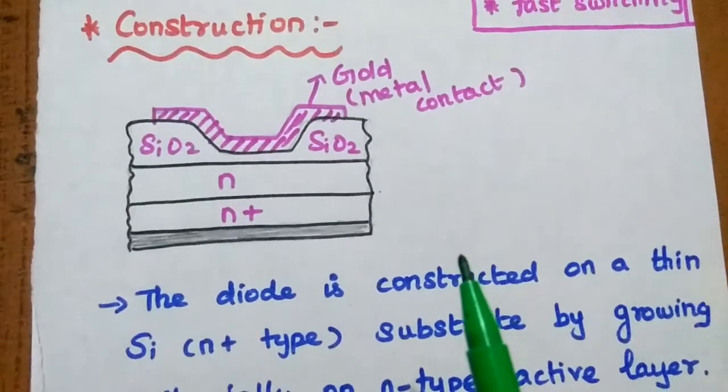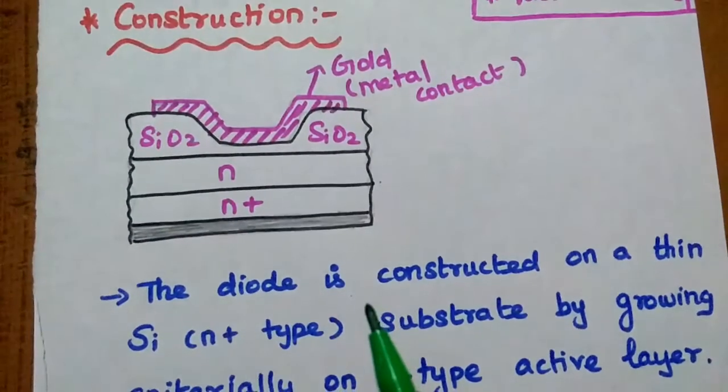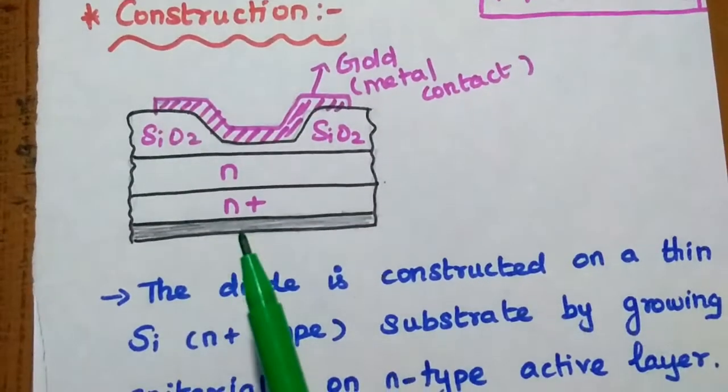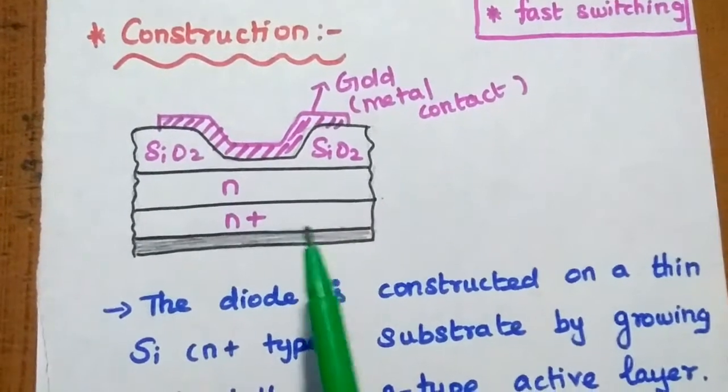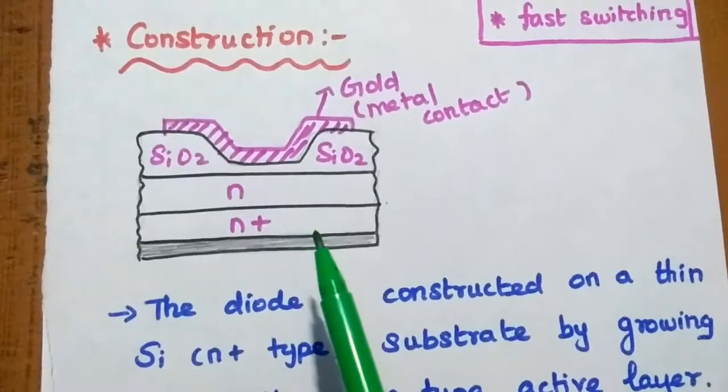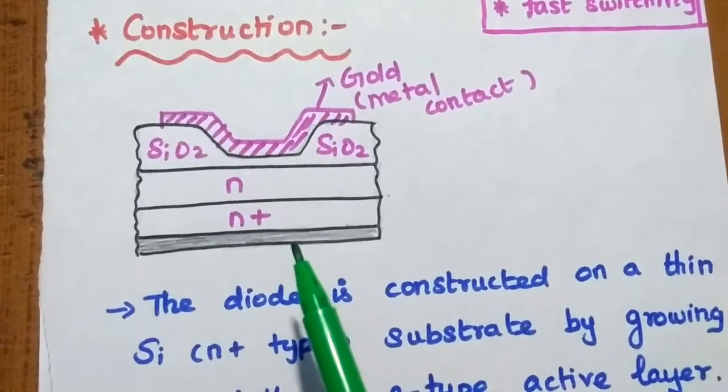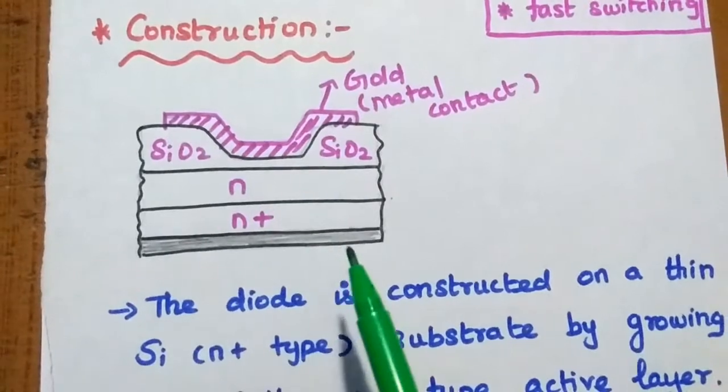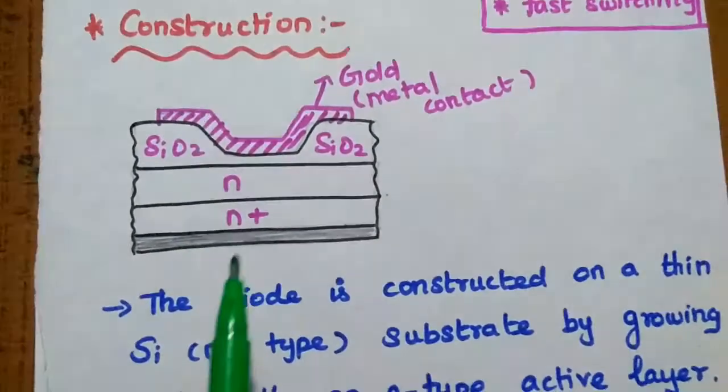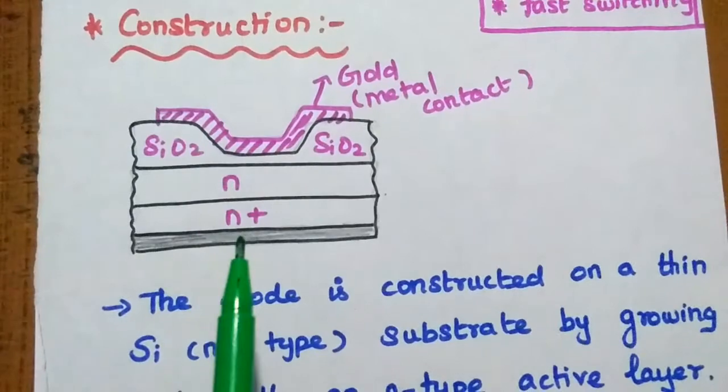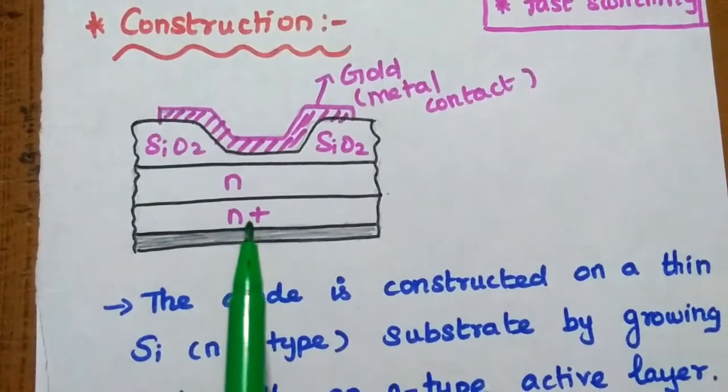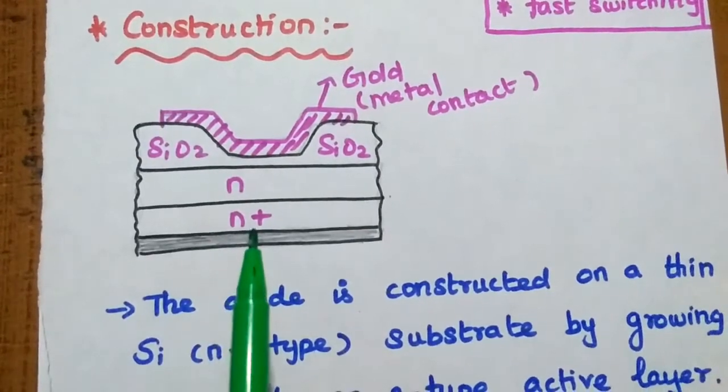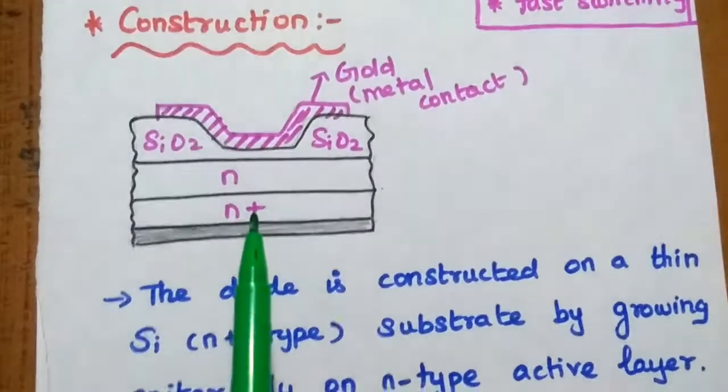Construction of Schottky barrier diode. This diode is constructed on a thin silicon substrate by epitaxial growth method. As you all know, epitaxial growth and these are different methods of linear integrated circuits. Here a thin silicon substrate is there which is N-plus type. N-plus means the majority carriers are electrons. It is heavily doped.